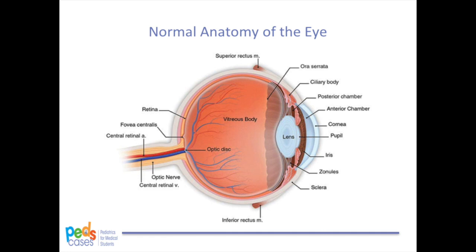Before talking more about glaucoma, let's first review the anatomy of the eye. There are three chambers to the eye: the anterior chamber between the iris and cornea, posterior chamber between the iris and lens, and the vitreous humor behind the lens. The angle often referenced in glaucoma is formed between the iris and cornea. The ciliary body is a sphincter muscle that surrounds the lens. One of its functions is to produce aqueous humor that fills the anterior and posterior chambers. The aqueous humor travels out through the pupil to the trabecular meshwork and flows out of the eye through Schlemm's canal.